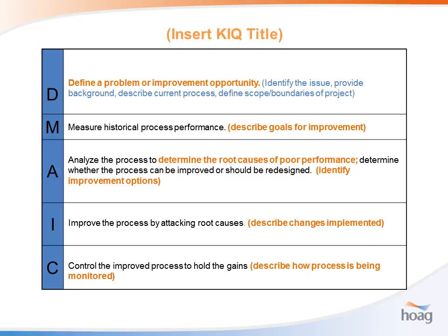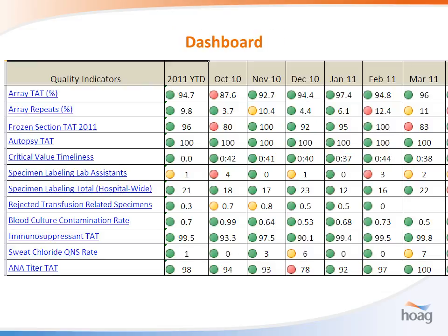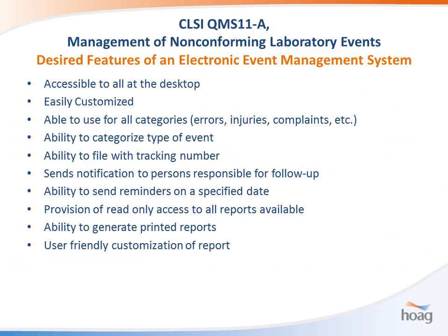We use a DMAIC model when we take a KIQ and form a project around it: define the problem, describe the goals for improvement, determine the root cause, describe your changes, and describe how you're going to control and monitor. It's simpler than full lean or focused PDCA. The gold standard is to have a dashboard with green, red, and yellow lights where you can click on any link to get at the actual data — something I'm striving for. There are commercial products that can provide a dashboard as well.